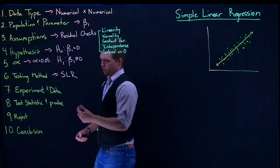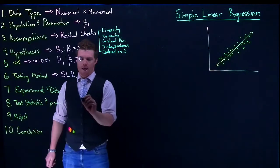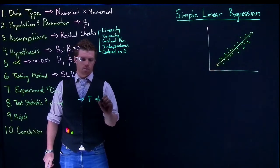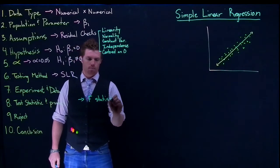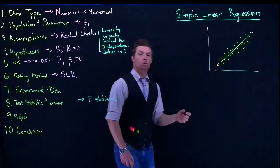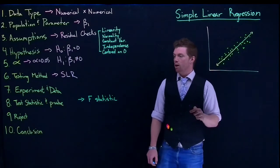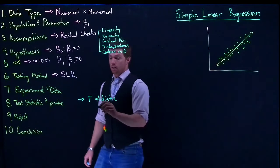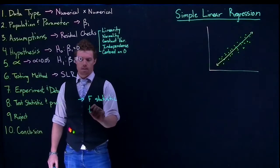So one way that we can do it is we could report an F statistic, just like we used when we were reporting an ANOVA test, and we'll go into the nuts and bolts of that. Or we can also report a T statistic.